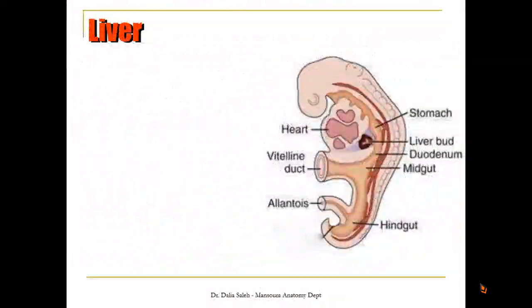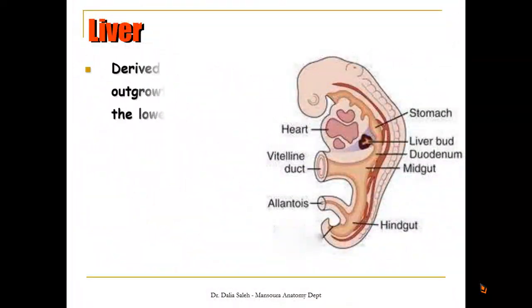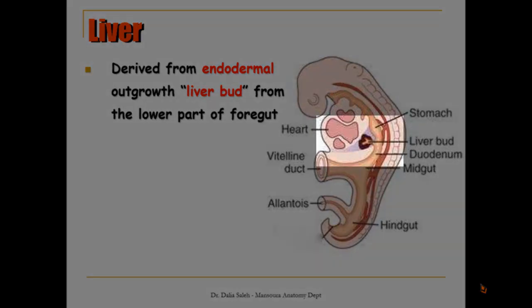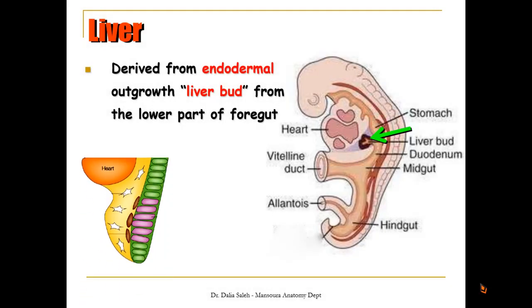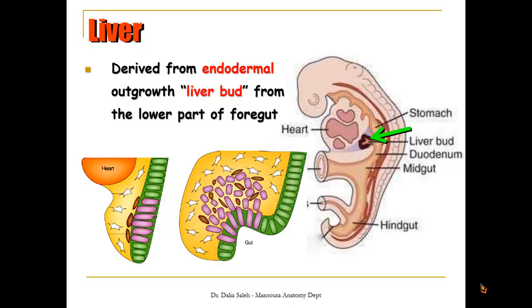To start with the development of the liver, in this sagittal section of an embryo, you can see that at the region of the lower part of the foregut there is an outgrowth. It is called the liver bud. This is the endodermal lining of the foregut. At this region, the endodermal lining outgrows and forms the liver bud.